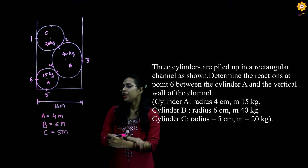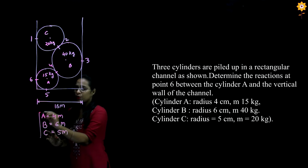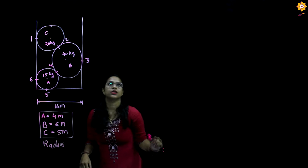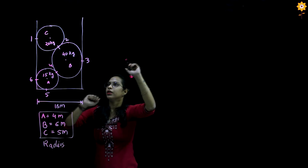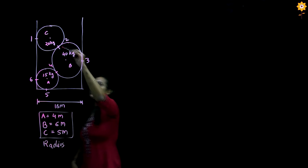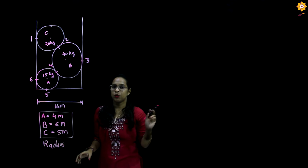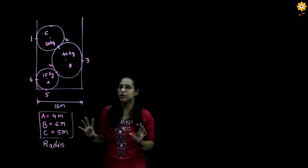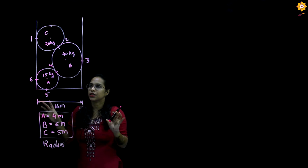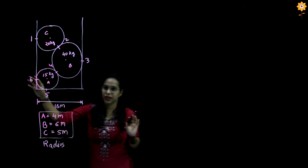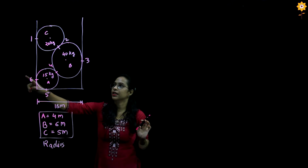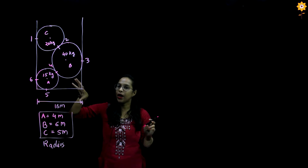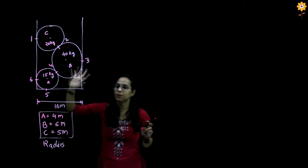Now, as we have all the information, we can start solving the problem. We do not have to find the reaction between the cylinders. The question only asks to find the reaction at 6. So we can find R6 without separating everything — we will take that approach and find only what is required.